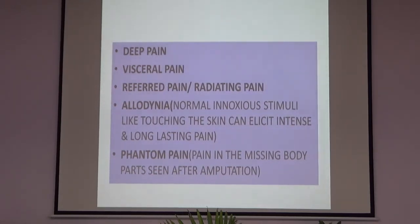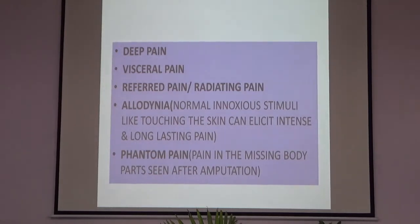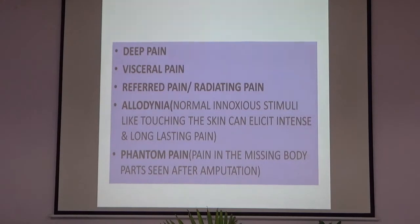What is allodynia? Allodynia is when normal, innocuous stimuli like touching can cause intense and long-lasting pain — that is, innocuous stimuli cause very severe pain. What is phantom pain? Phantom pain is where pain is felt in a missing body part, seen after amputation, such as in knee amputation, below-knee amputation, or arm amputation. The patient feels pain in that part which is no longer there. This is called phantom pain.